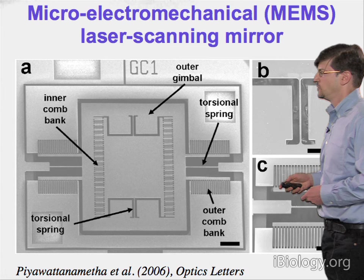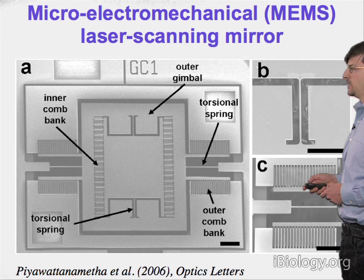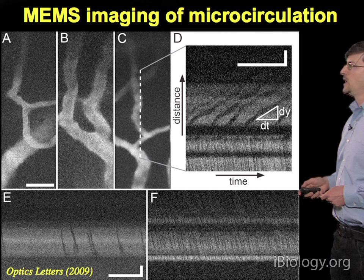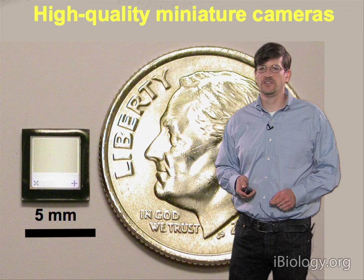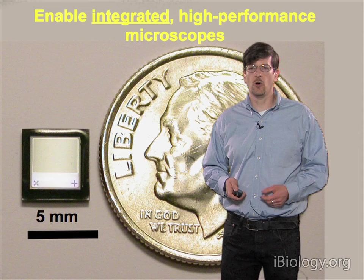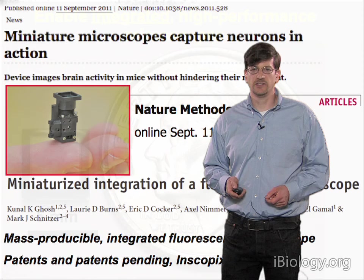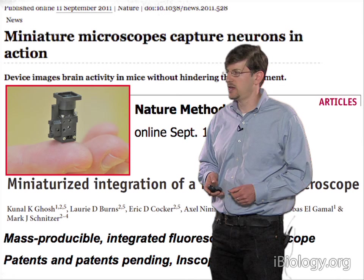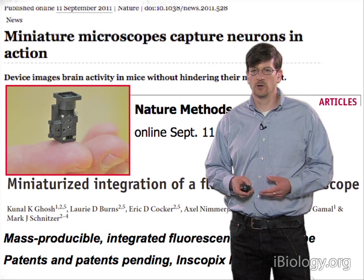With this MEMS mirror microscope, we were able to visualize microvasculature and capillary flow speeds in vessels of the neocortex. More recently, we realized that advances in semiconductor cameras — such as those used in cell phones — provide an opportunity to create an entirely integrated high-performance light microscope, where all optical parts from light source to camera are contained within a tiny miniaturized package. This project was published as a collaboration between my lab and that of Abbas al-Gamal. I should also mention I'm involved with a company that has emerged to commercialize this technology.